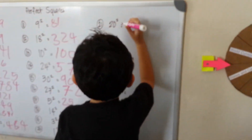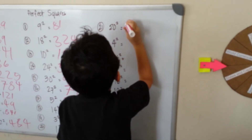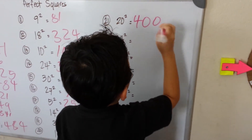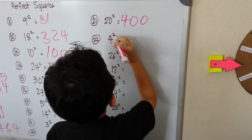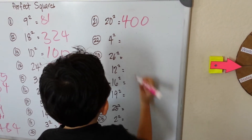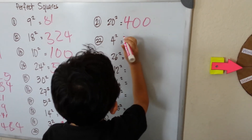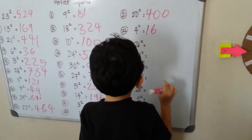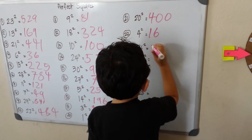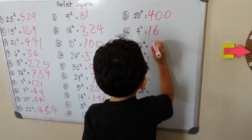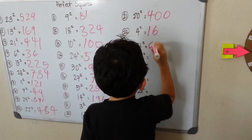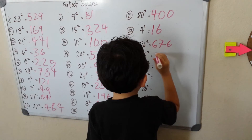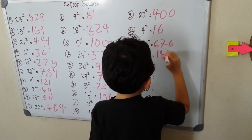20 squared is 400. 4 squared — that means it's 16. 26 squared is 676. Okay, 12 squared is 144.